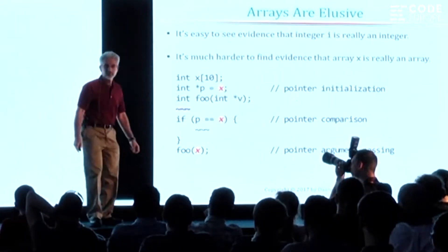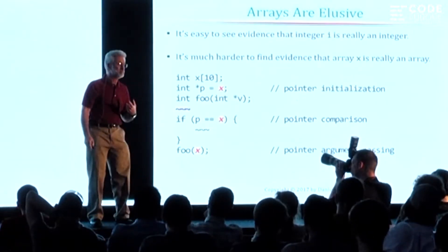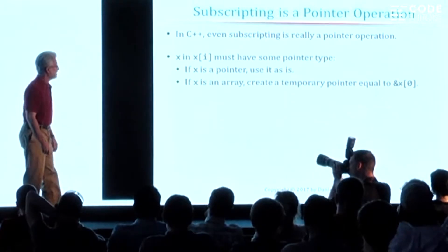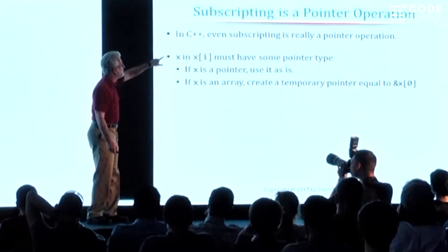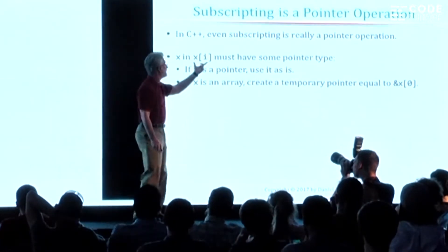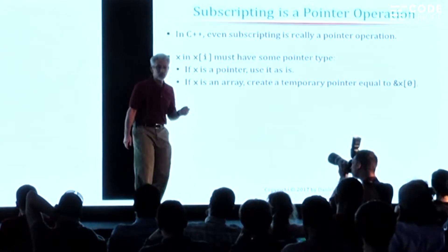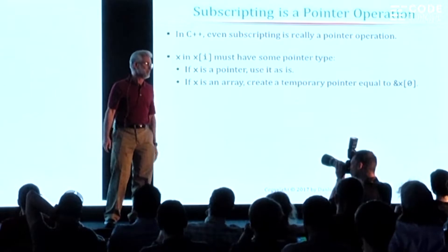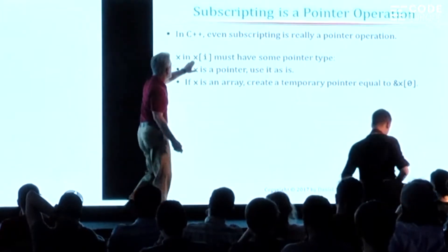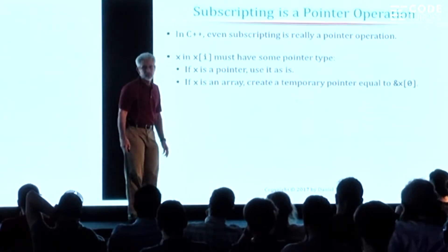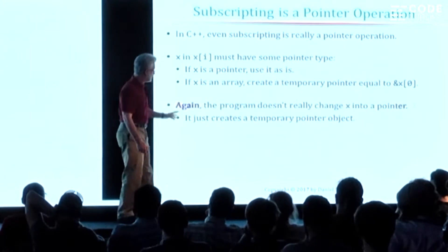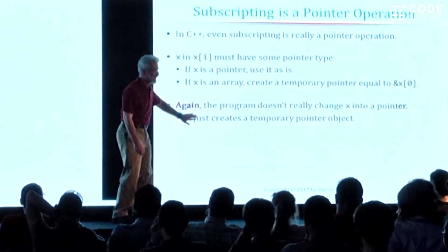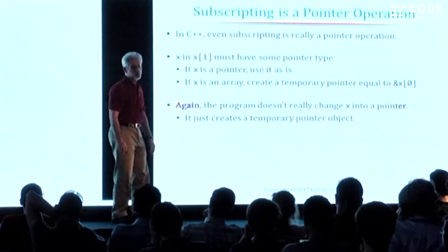So how can you tell that an array really is an array? Even the square bracket operator — if you look up in the specification of C and C++ how the square bracket operator is defined — it's actually defined as a pointer operation. It says X must be a pointer and the index must be an integer. If what you provide is an array, it says 'I'll turn it into a pointer and use it as if it's a pointer.' Again, that transformation is only momentary — it's creating a temporary and using that temporary pointer for completing the expression, then it throws away the temp.